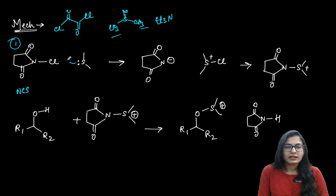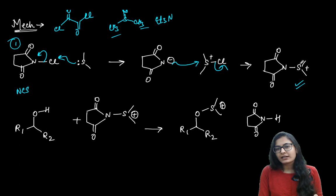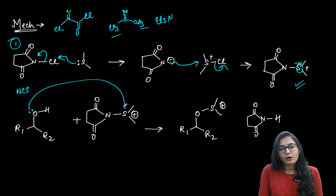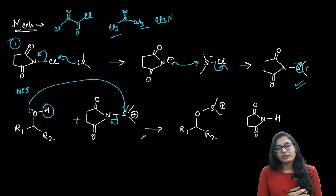In the first step of Corey-Kim, NCS (N-chlorosuccinimide) is attacked by DMS (dimethyl sulfide) on the chlorine — a negative charge comes on nitrogen since it is more electronegative. Then nitrogen attacks over sulfur, removing Cl⁻, generating an electrophilic sulfur intermediate. The oxygen of the alcohol then attacks on sulfur, opening up the nitrogen–sulfur bond, and nitrogen takes away a proton, giving you the key oxygen–sulfur bonded intermediate.